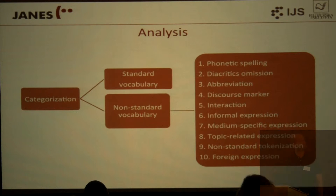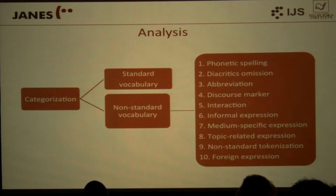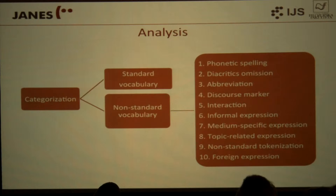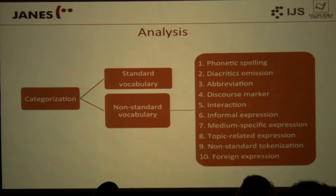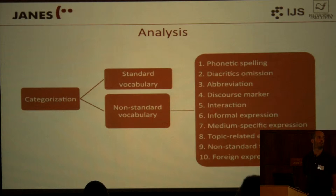Returning to the colleagues' work: they had the 200 keywords from the spoken corpus compared to the written corpus, and 200 keywords from the CMC corpus. They categorized each word as standard or non-standard, then applied a 10-level annotation schema to the non-standard vocabulary, consisting of: phonetic spelling, diacritic omission, abbreviation, discourse marker, interaction, informal expression, medium-specific expression, topic-related expression, non-standard tokenization, and foreign expression.